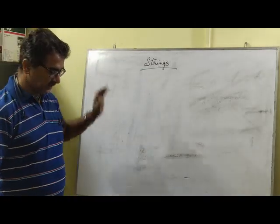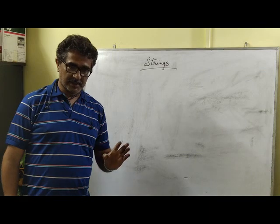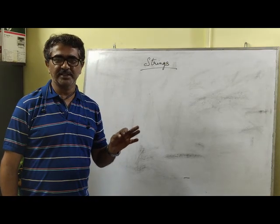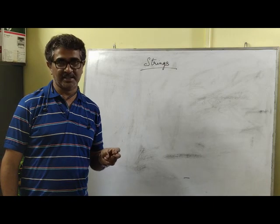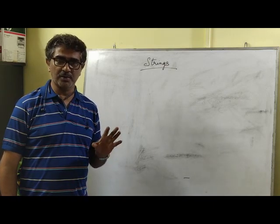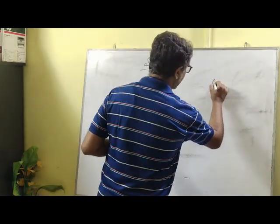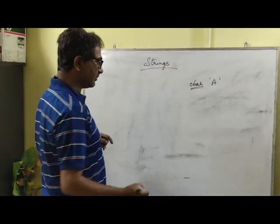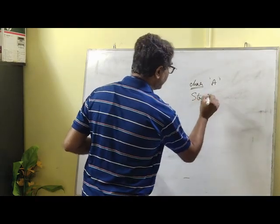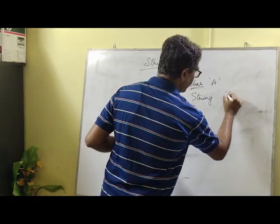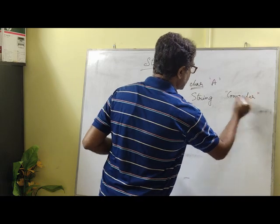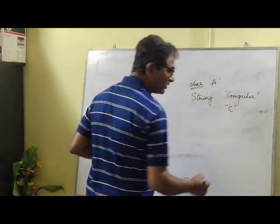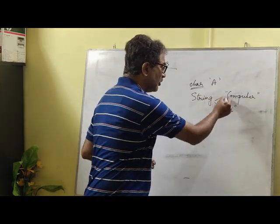Today we are going to start with strings in Java. Students sometimes get confused with character and string. Any text enclosed within single quotes is considered to be a character, and any text enclosed within double quotes is considered to be a string. For example, a character is a primitive datatype, while a string is a composite datatype — always a group of characters enclosed within double quotes. Even a single character enclosed within double quotes is called a string.